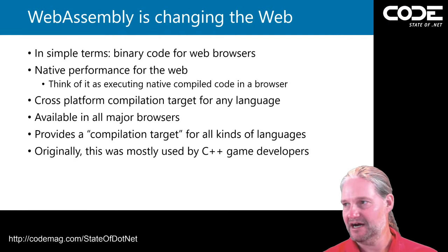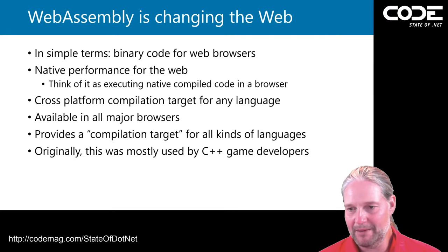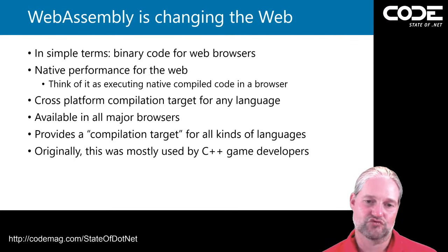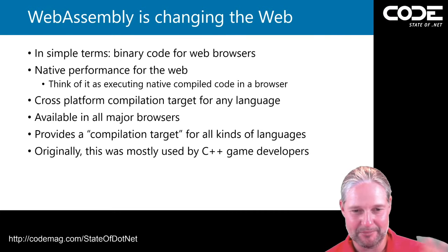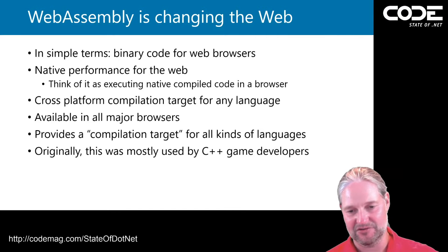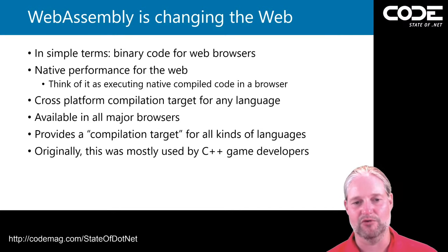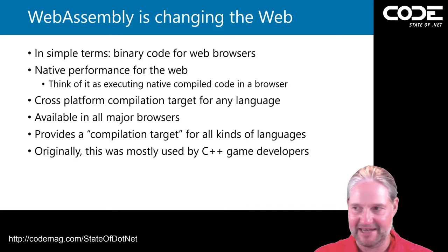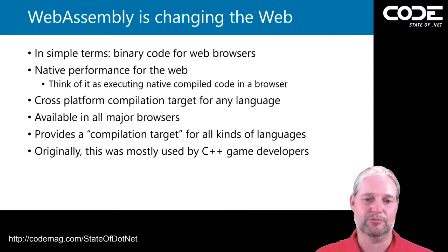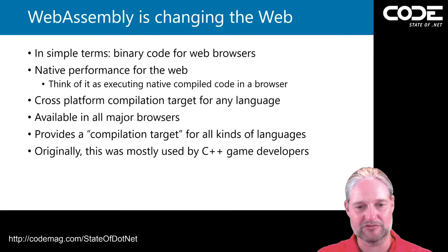In simple terms, WebAssembly is the standard for running binary code in web browsers — it's almost as good as pure assembly code. There's a little overhead because it's cross-platform and runs on mobile devices, Mac, Windows, and all those things, but it's very, very close to native performance for the web. It can be a target for any language, and it's available in all the major browsers. Question online: can you use Blazor for production? Yes, you can — even client-side Blazor was released a few months ago with the .NET Core 3.1 SDK, and server-side Blazor was released in November.